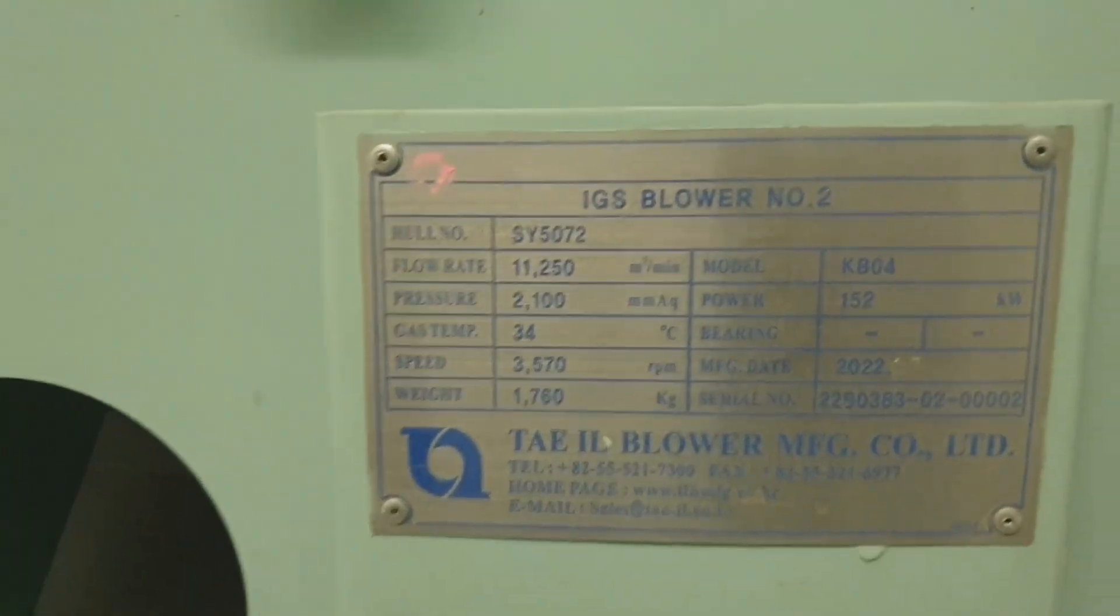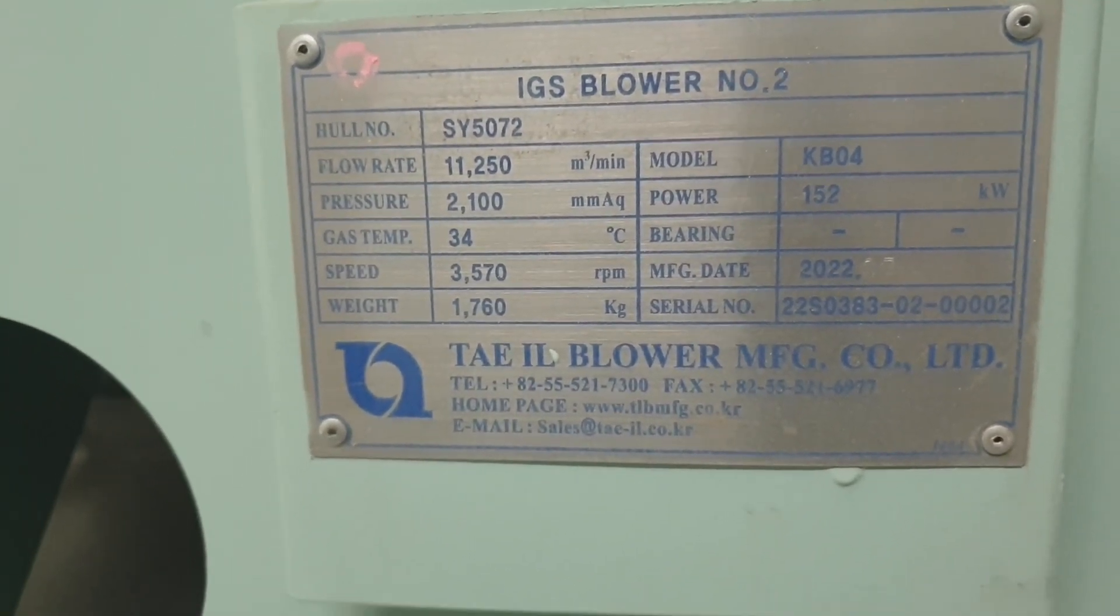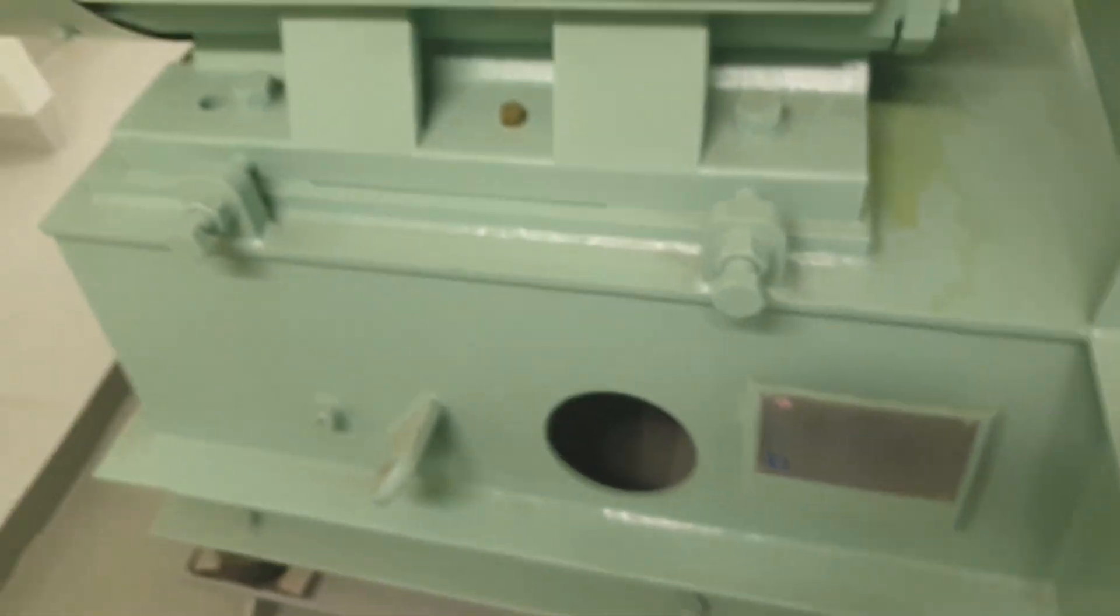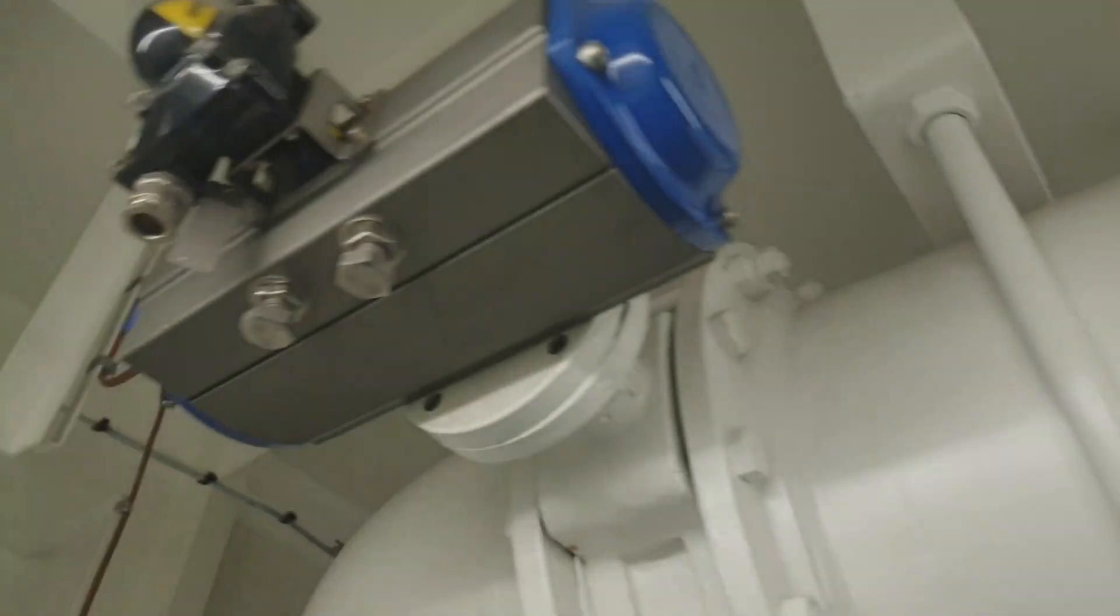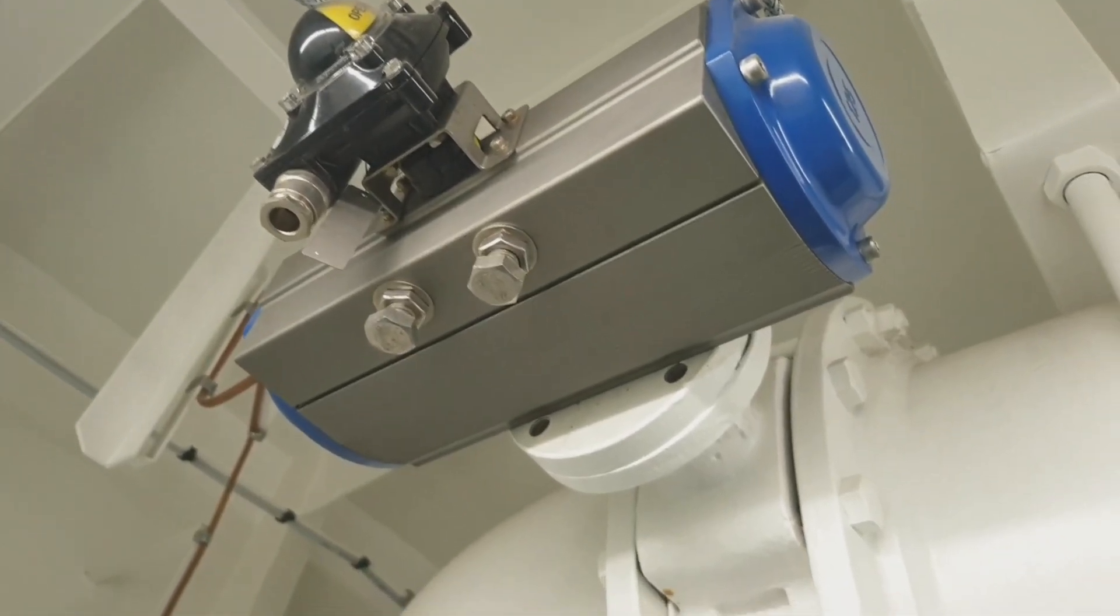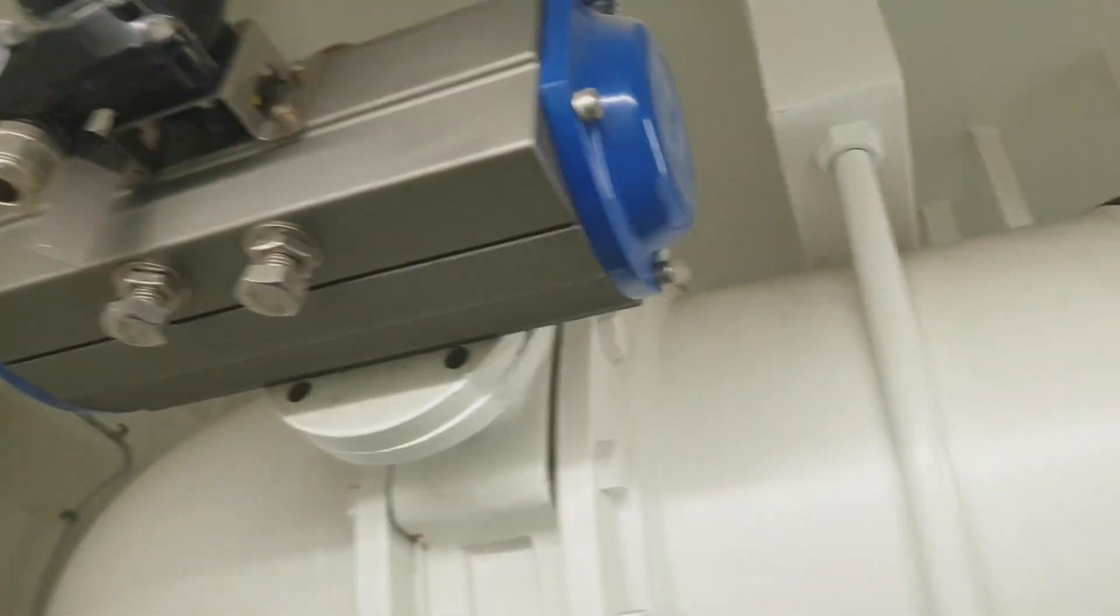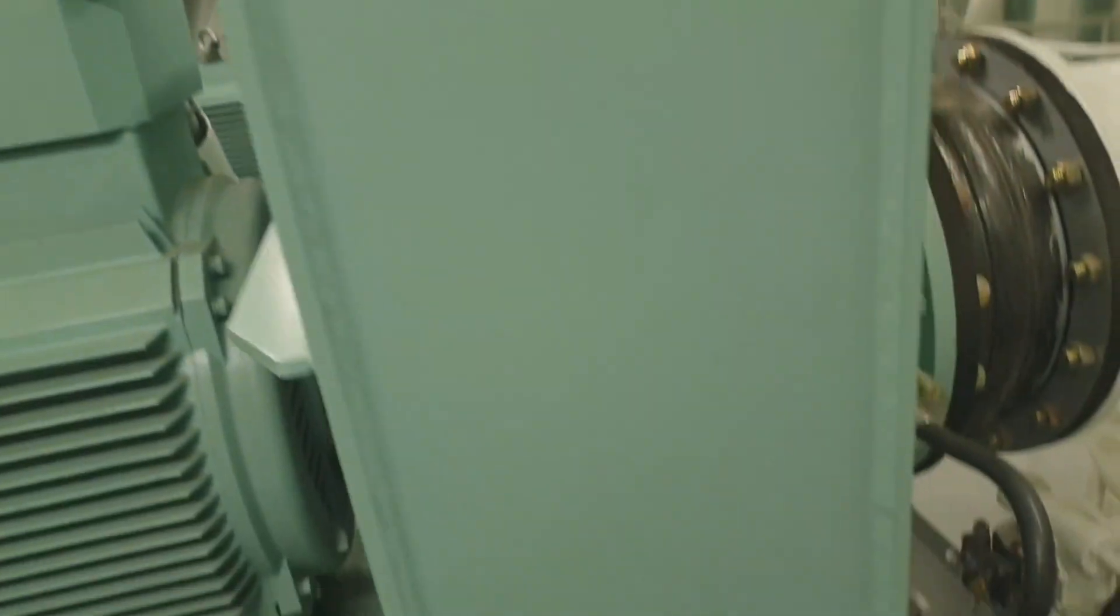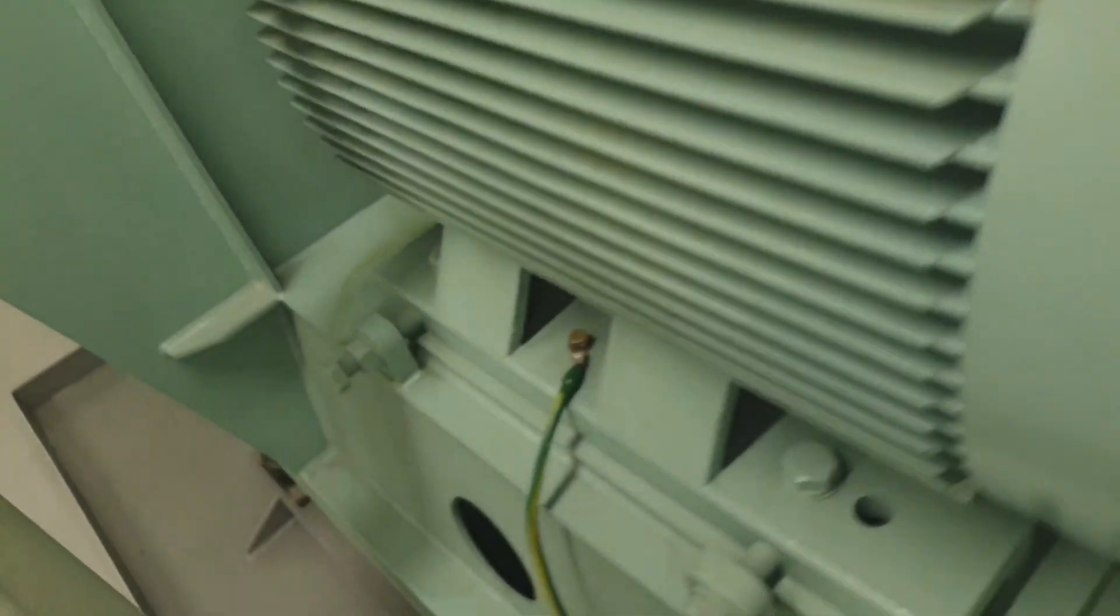As you can see, here is the specification of the inert gas system blower. And this is the discharge valve of the IG blower, the electro-pneumatic controlled discharge valve. This valve automatically opens as soon as it receives a running signal from the IG blower motor. This is the impeller side, and the driven electric motor side.